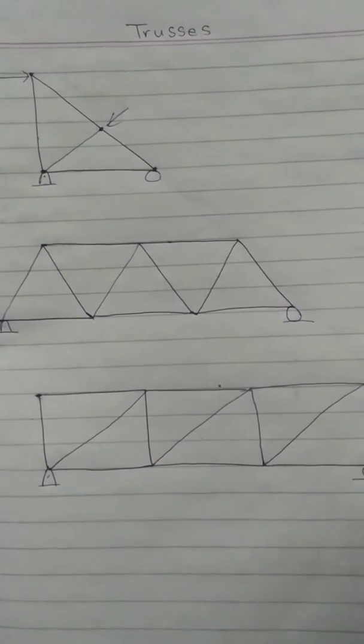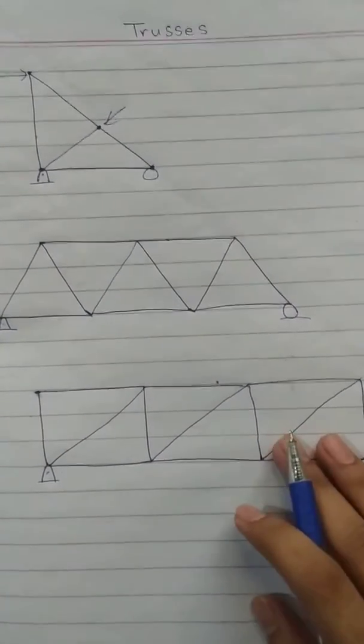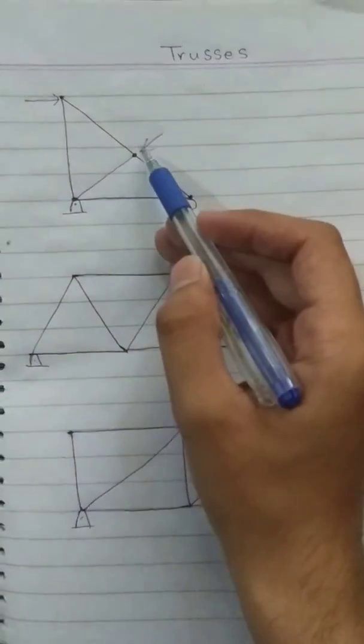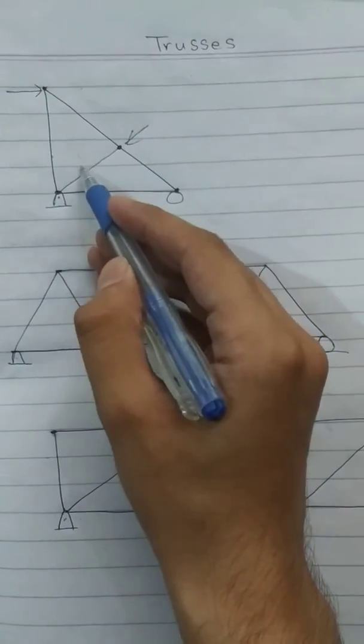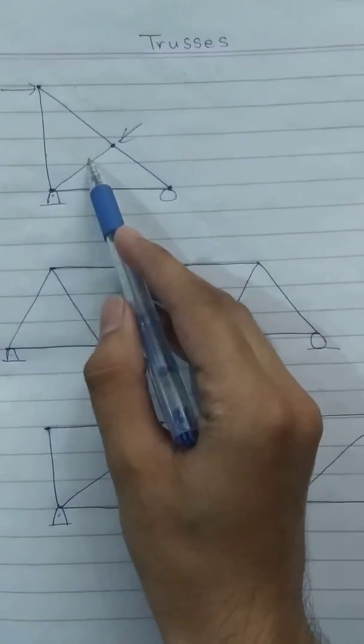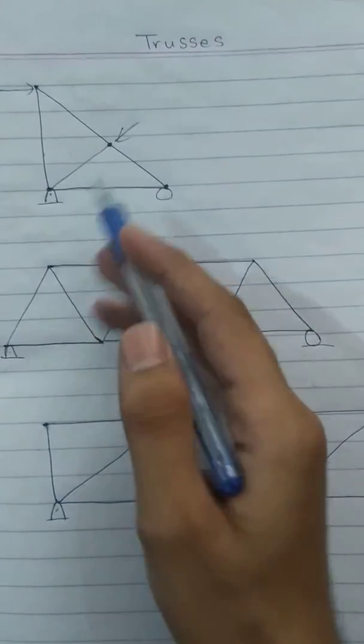The loadings are applied at the joints. These cannot be applied at the middle, and we will neglect the weight of these members for our analysis.